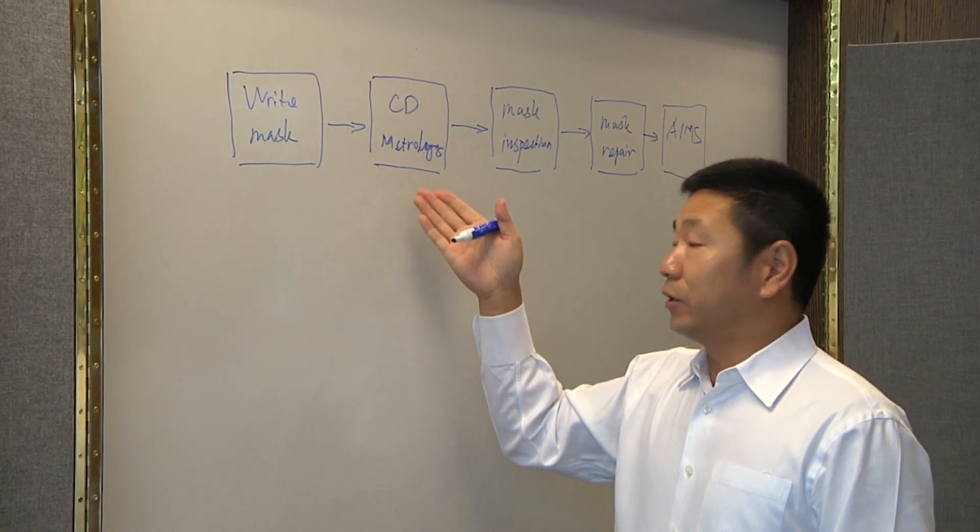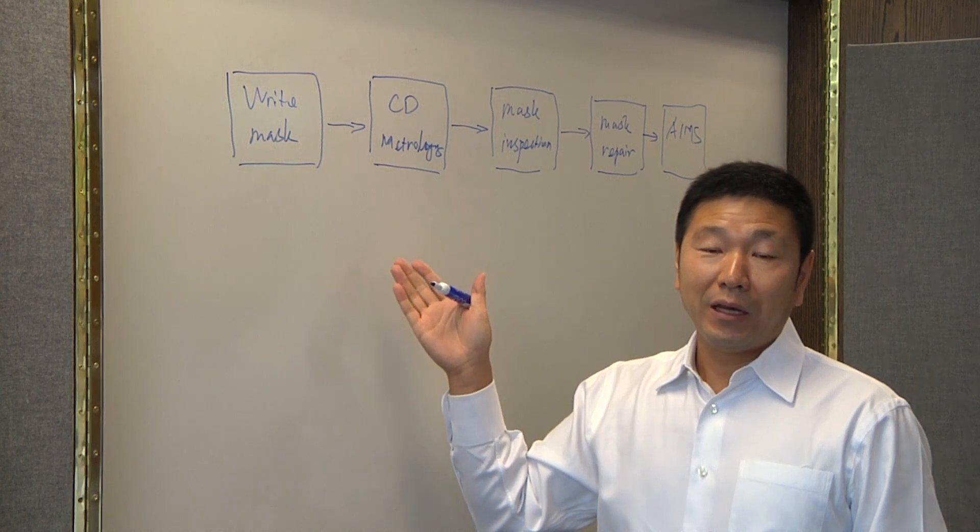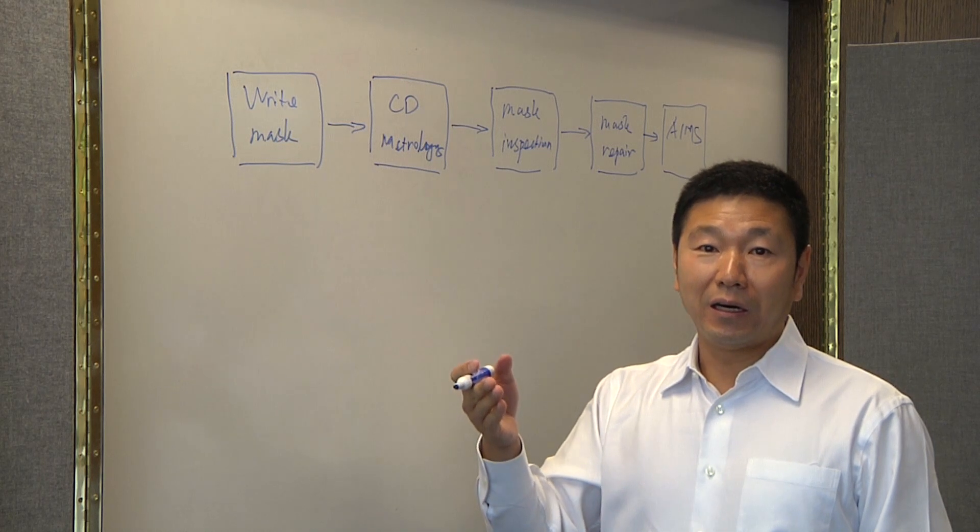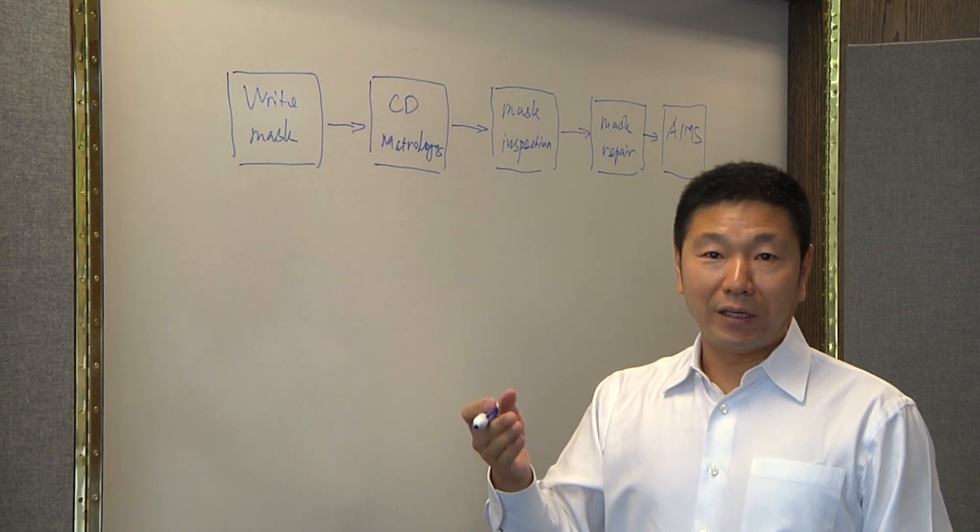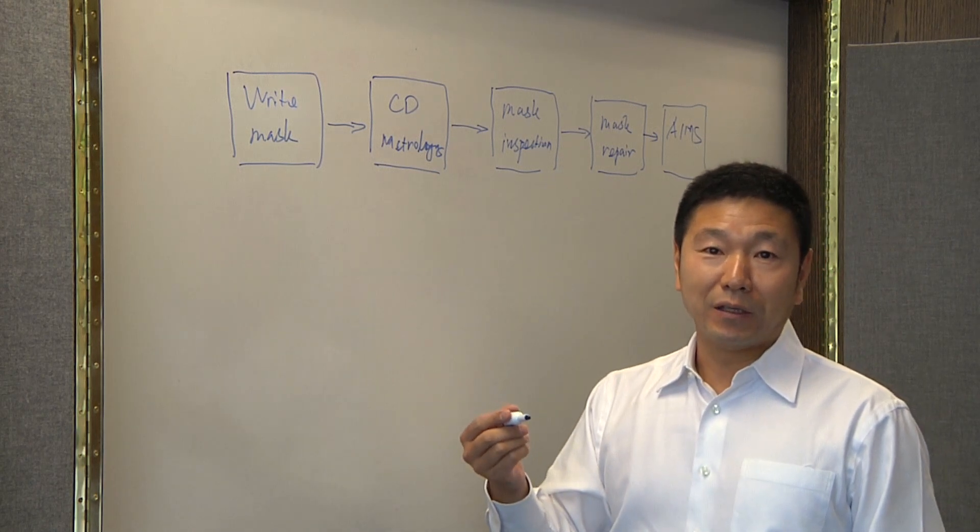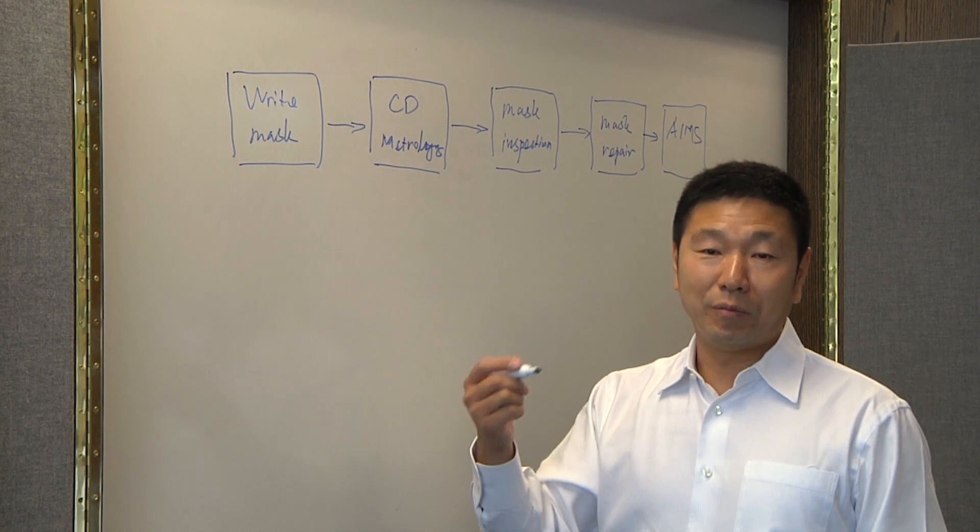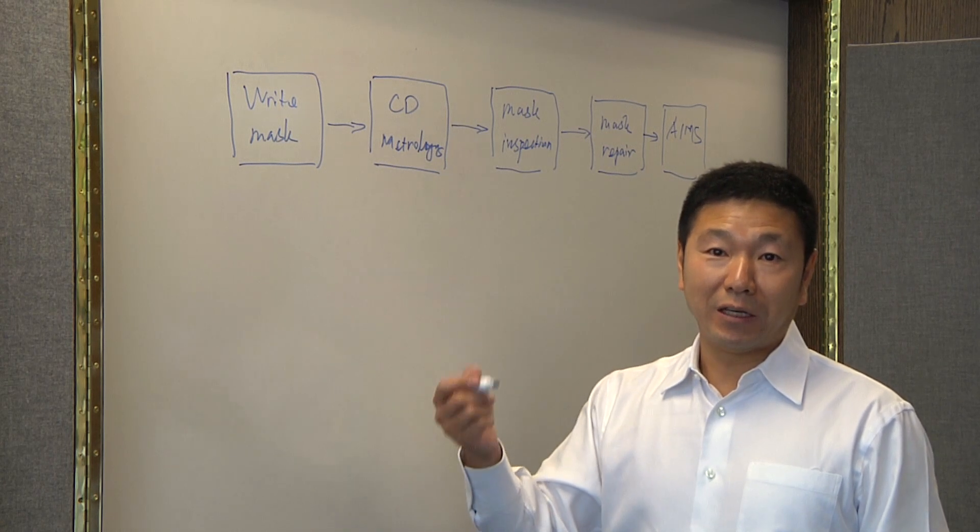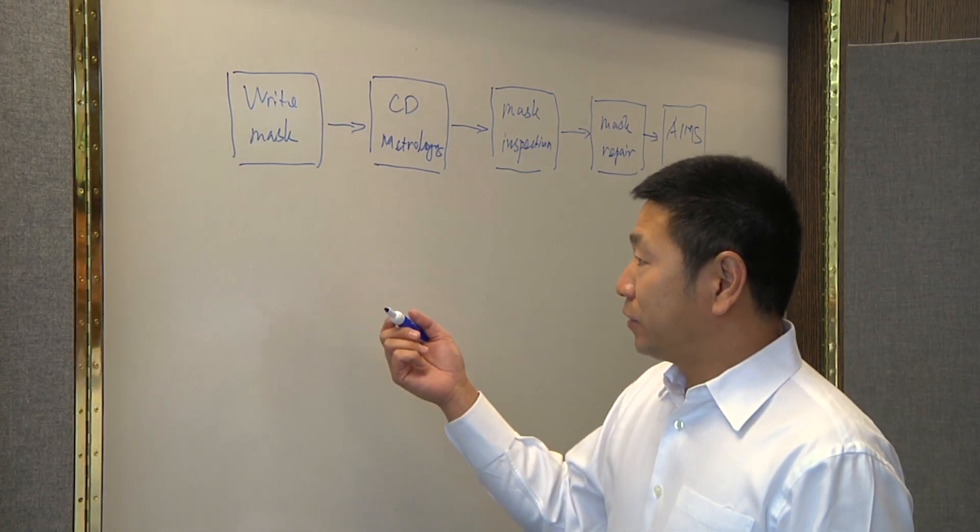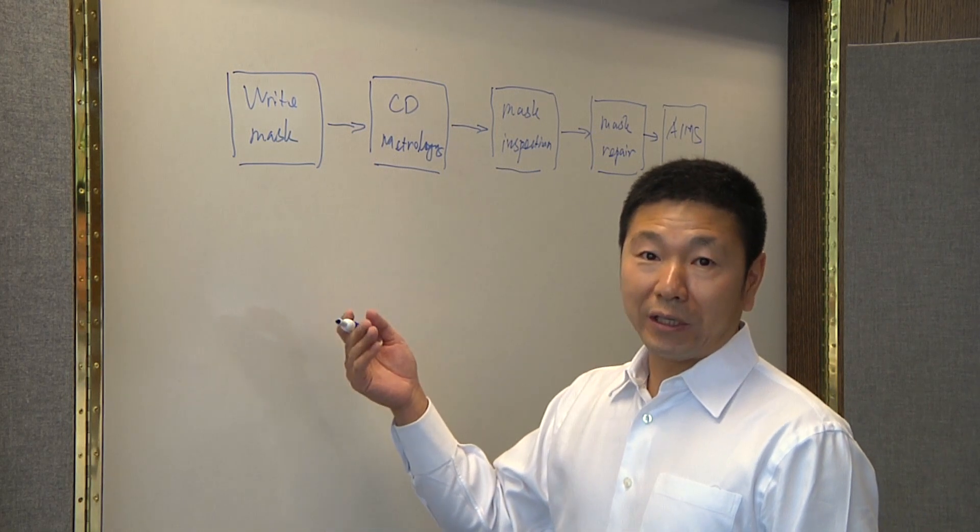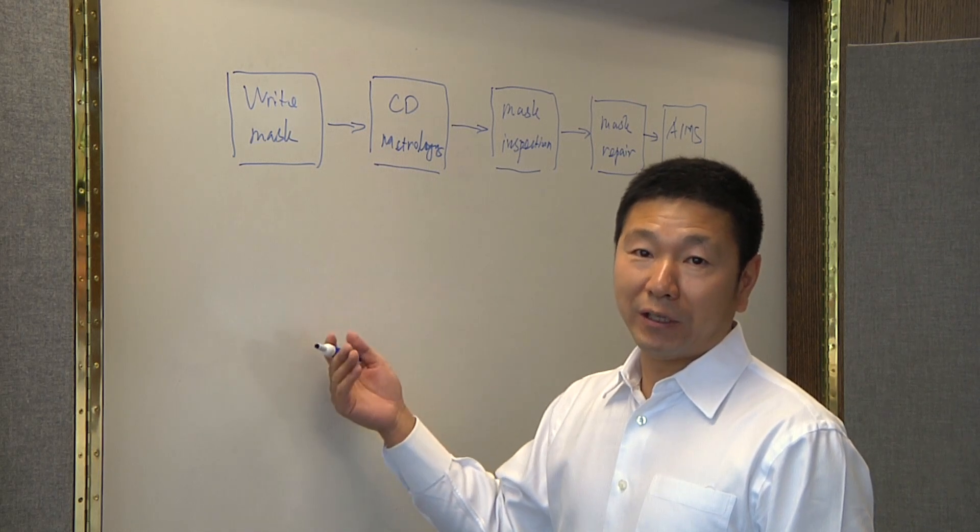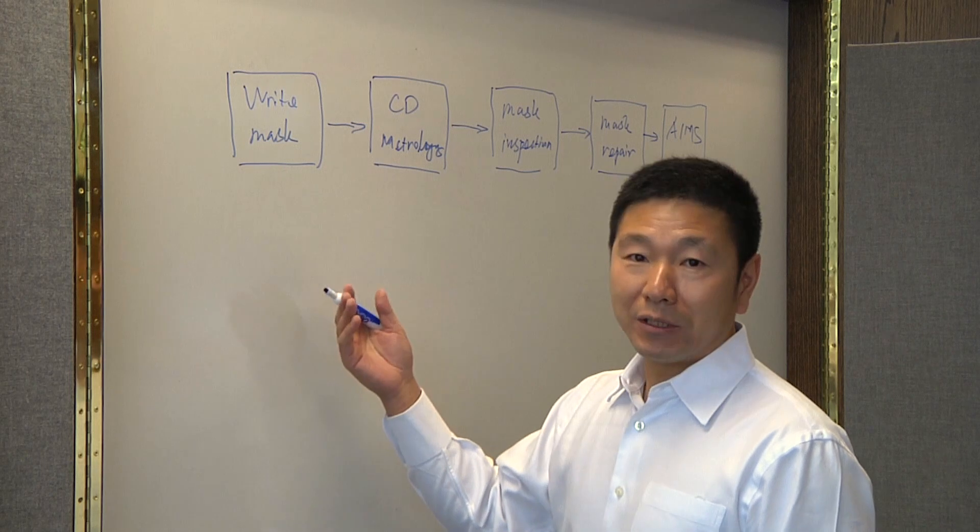CD metrology is usually done by CD-SEM. In the old days, you just had to add some CD bars and measure those CD bars. But recently, customers like the wafer fabs ask for more CD measurement. Secondly, they ask to measure on the actual pattern instead of the CD bars. But for the latest technology nodes, the challenge is since the resolution enhancement technologies are used, especially very aggressive OPC and even RET, the patterns become more complex.